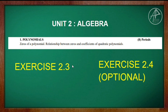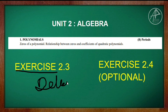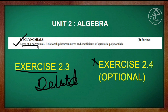Unit 2 is Algebra. The chapter under Algebra is Polynomials. For polynomials, Exercise 2.3 is deleted — it is optional. Topics that are important and related to exam questions include: zeros of a polynomial, and the relationship between zeros and coefficients of a quadratic polynomial.